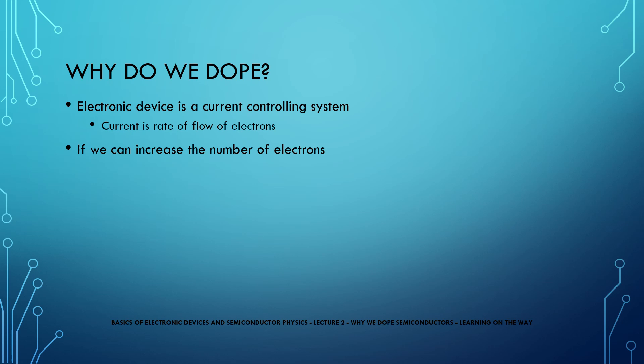So, somehow by doping, if we can increase the number of electrons, we can basically control the number of additional electrons by the amount of impurities we add, indirectly controlling the output current.